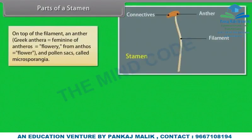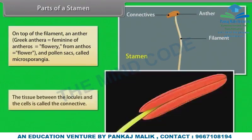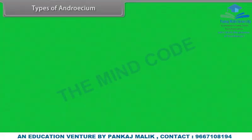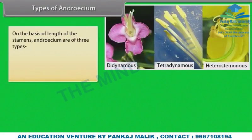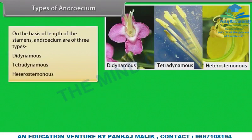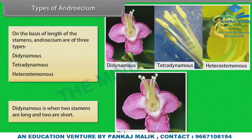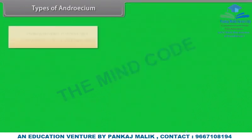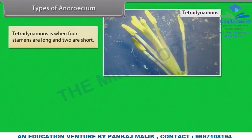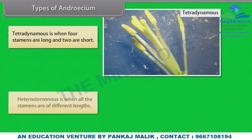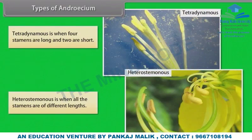On top of the filament is the anther with pollen sacs called microsporangia. The tissue between the locules and the cells is called the connective. On the basis of length of stamens, androsium is of three types: Didynamous — when two stamens are long and two are short; Tetradynamous — when four stamens are long and two are short; Heterostaminous — when all the stamens are of different length.